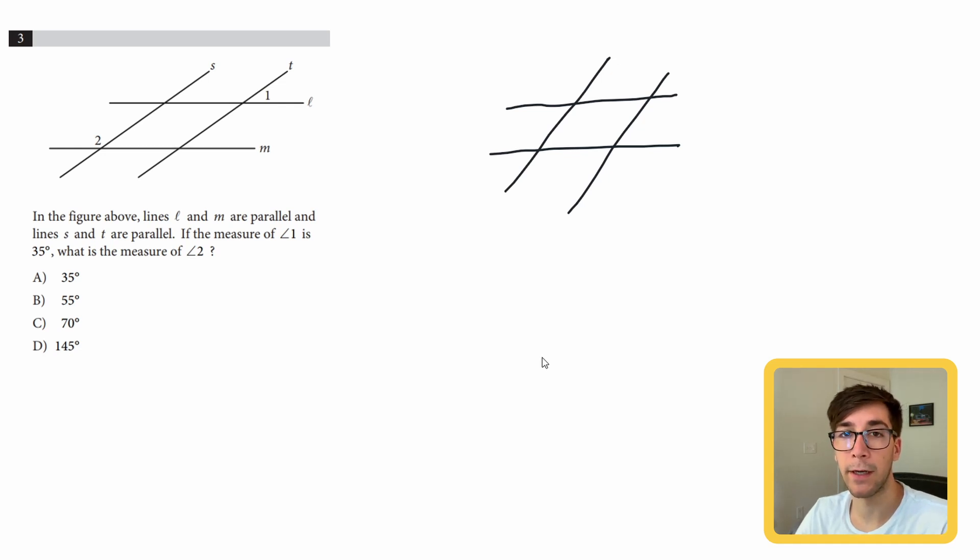First thing you need to identify is if these lines are parallel. And if they look parallel, they probably are. They're going to tell you in the problem, but you should always check. So in this case, I'm going to say these are parallel lines. And the way of denoting that is with these arrows. So this one has one arrow. So those are parallel. And these ones have two because these are a different set of parallel lines.